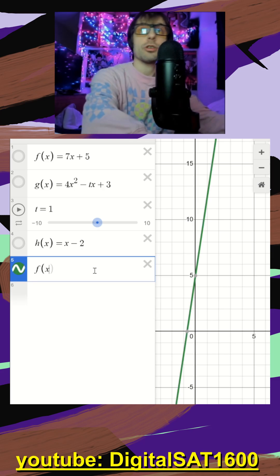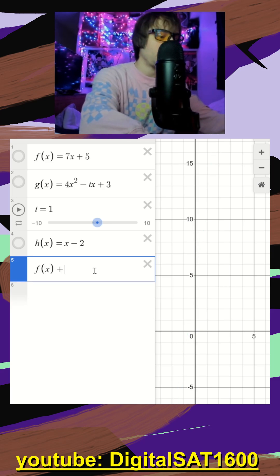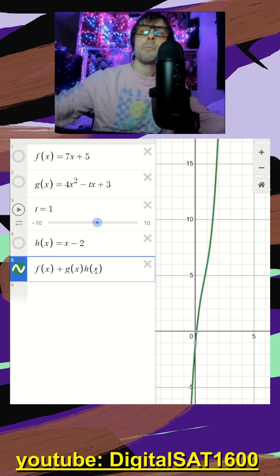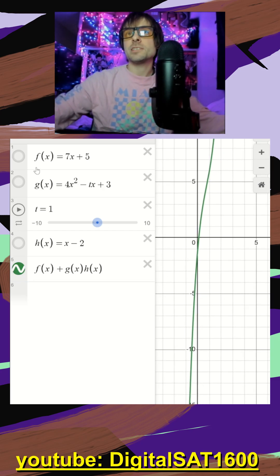So I can type our third or our fourth line, which is f of x plus g of x times h of x. The reason Desmos is able to graph this is because we've defined what all three of these functions are.